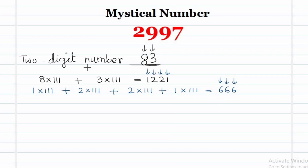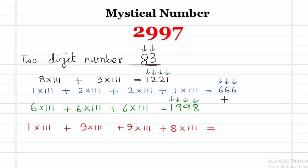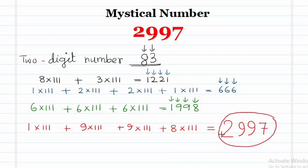What are the digits of 666? They are 6, 6, and 6. Let us multiply each digit by 111 and add them up — 6 into 111 three times — which gives us 1998. The digits of 1998 are 1, 9, 9, and 8. Finally, if we multiply each of these digits by 111: 1 into 111, 9 into 111, 9 into 111, and 8 into 111, and add all the terms, once again we get 2997, the desired number.